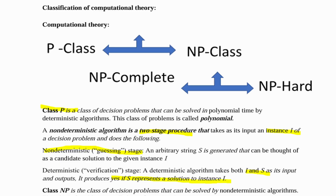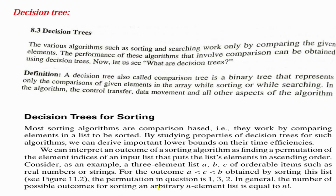Then we have what is class NP. Class NP is the class of decision problems that can be solved by non-deterministic algorithms. This class of problems is called non-deterministic problems. So we understand the definition of class P, class NP, and what a non-deterministic algorithm is.